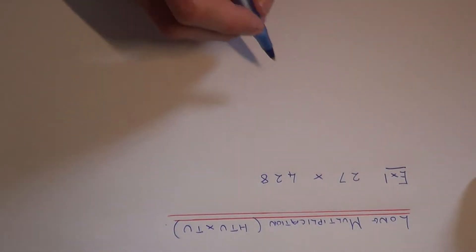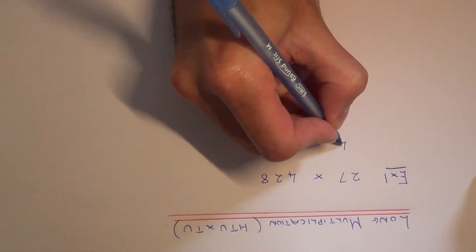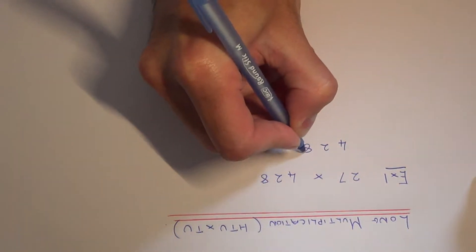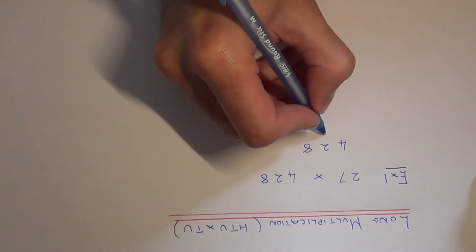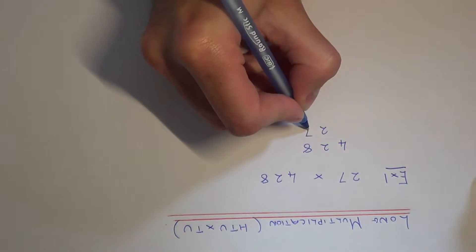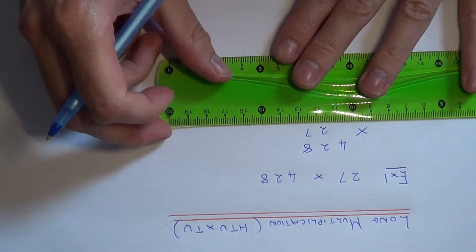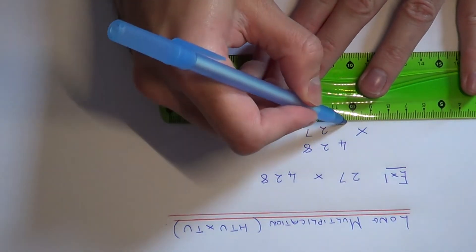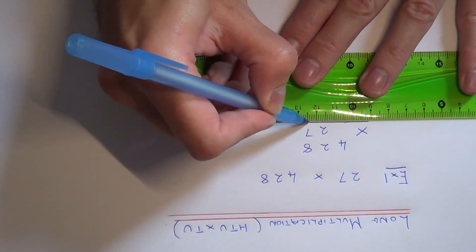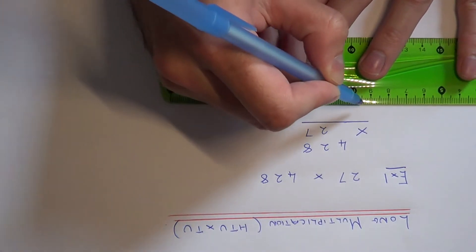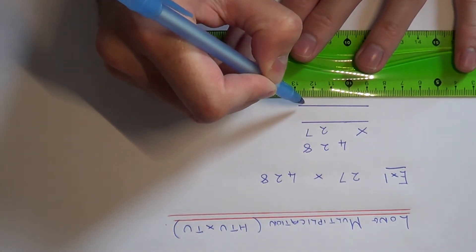First of all, put the 3 digit number on the top line and put the 2 digit number on the second line down. Now what we need is 3 answer lines underneath. So if we just draw these in.